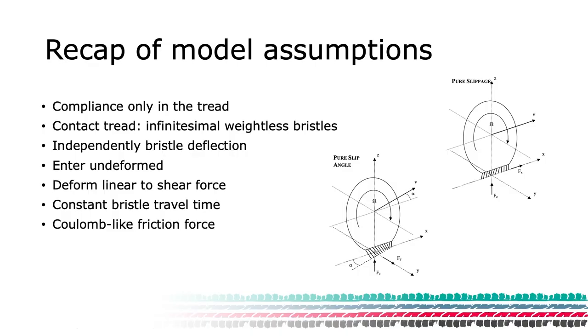The compliance or bending only takes place in the treads. This implies that both the rim and the tire carcass are assumed to be rigid.